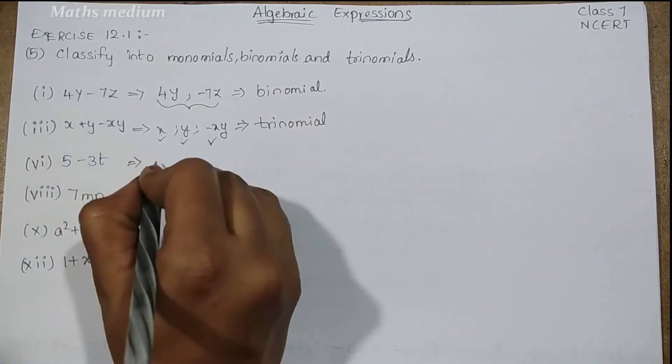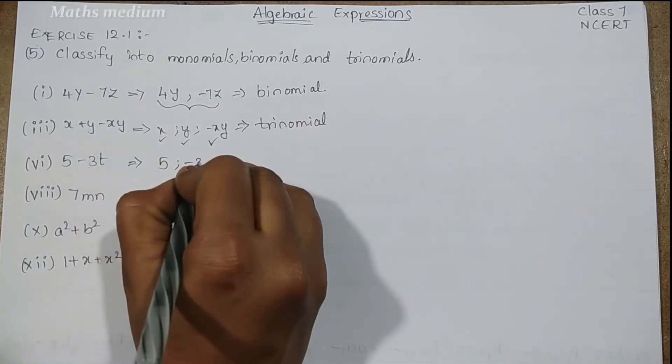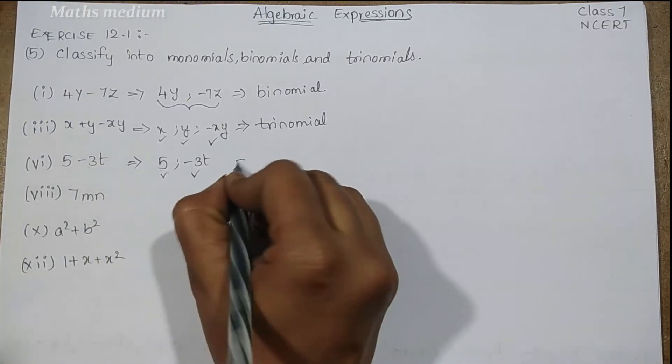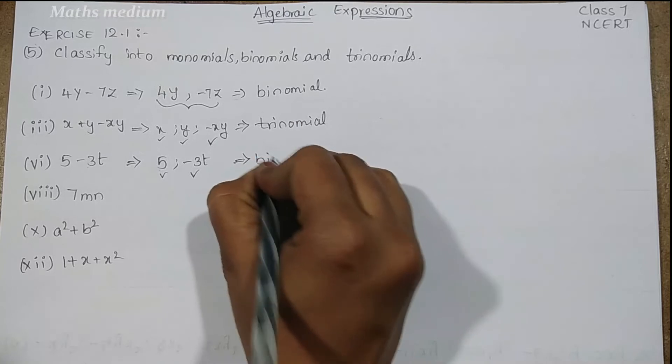Next one, 5 minus 3t. Here we have 1 and 2, two terms, so we know that's binomial.